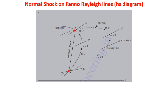The Rayleigh line is the intersection of the Fanoline. The two points are x and y — the intersection of the Rayleigh line and the Fanoline.